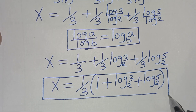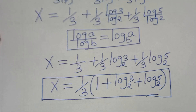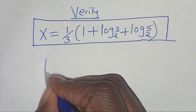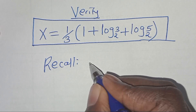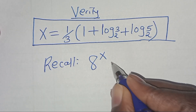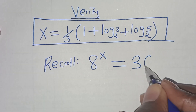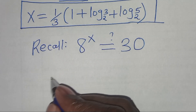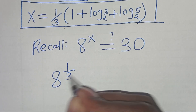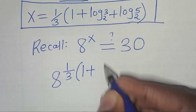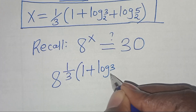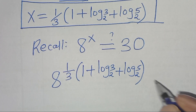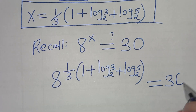Let's verify that this value of x satisfies the equation. If you recall, we have that 8 to the power x is supposed to give us a value of 30. Substituting the value of x, here we have 8 to the power 1 over 3 times (1 plus log 3 to base 2, plus log 5 to base 2), and this is supposed to give us a value of 30.